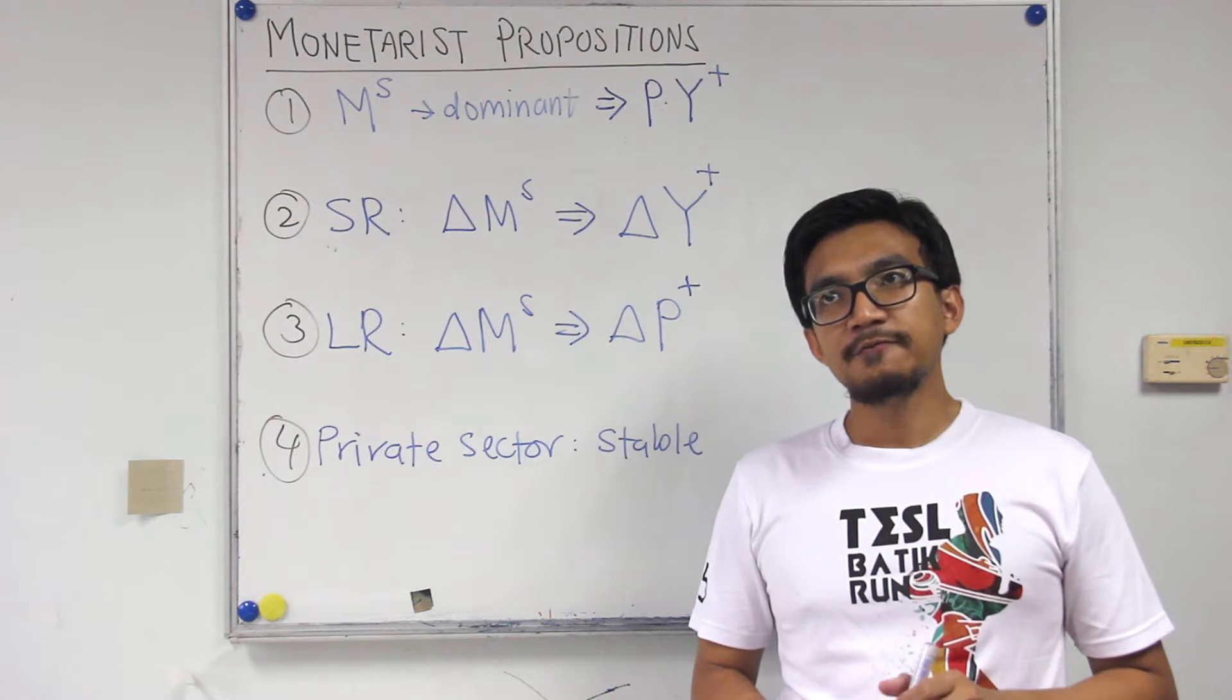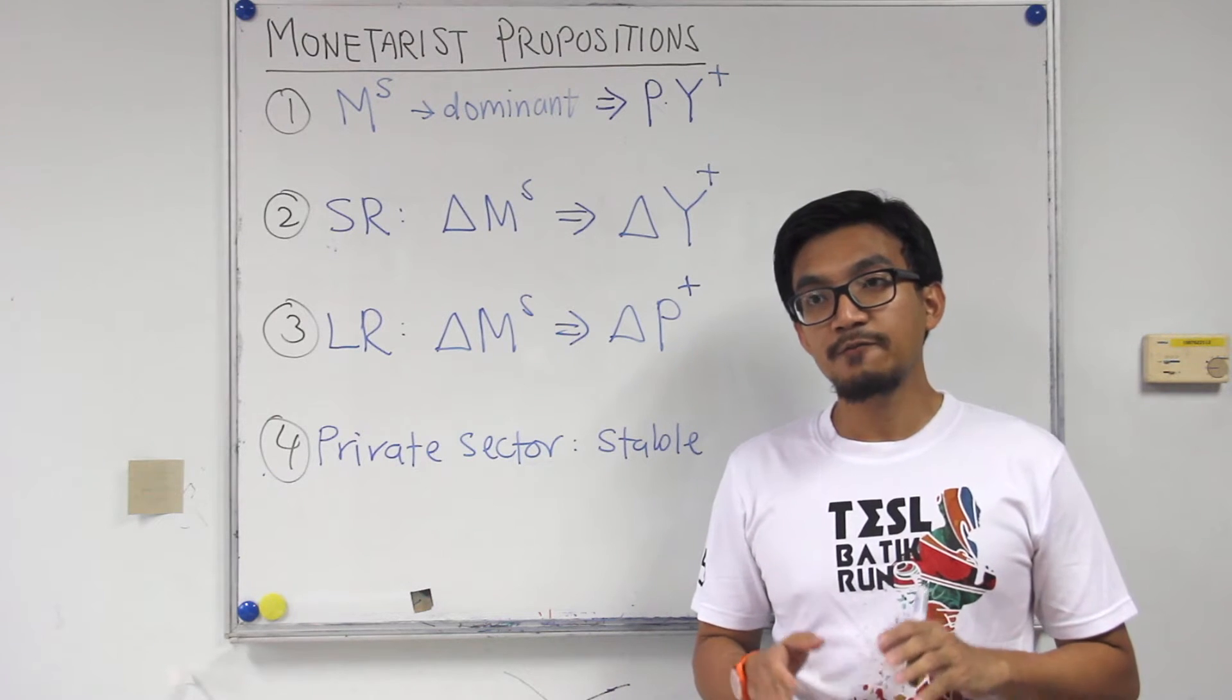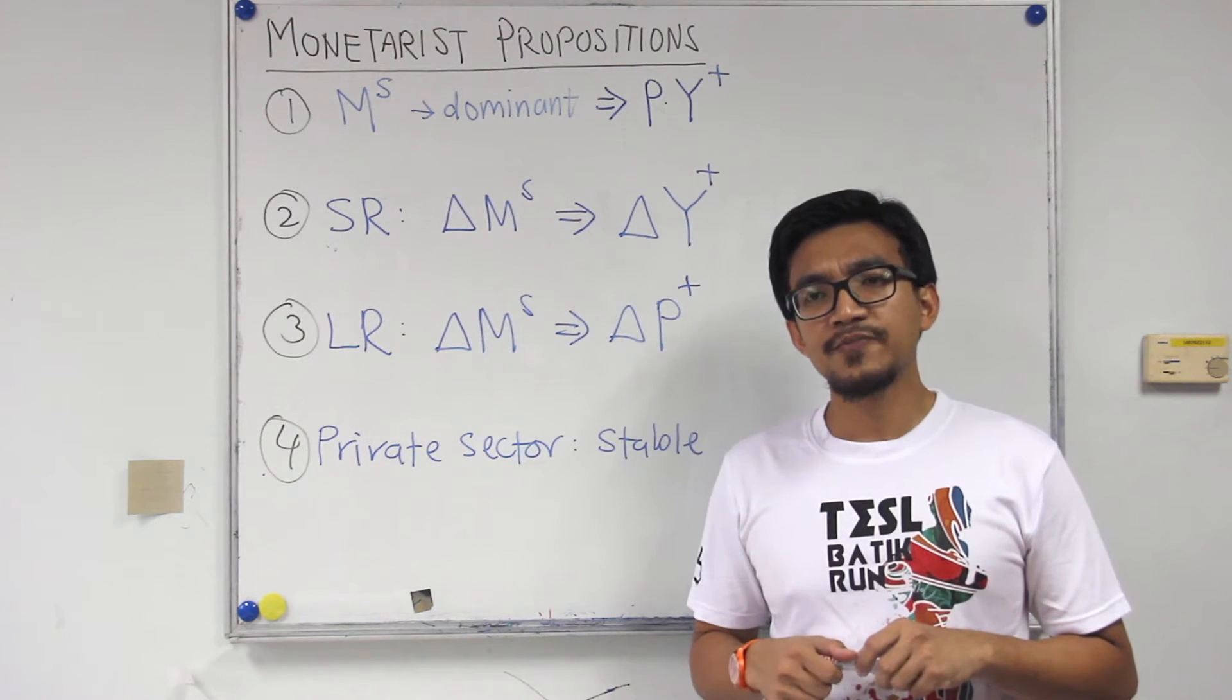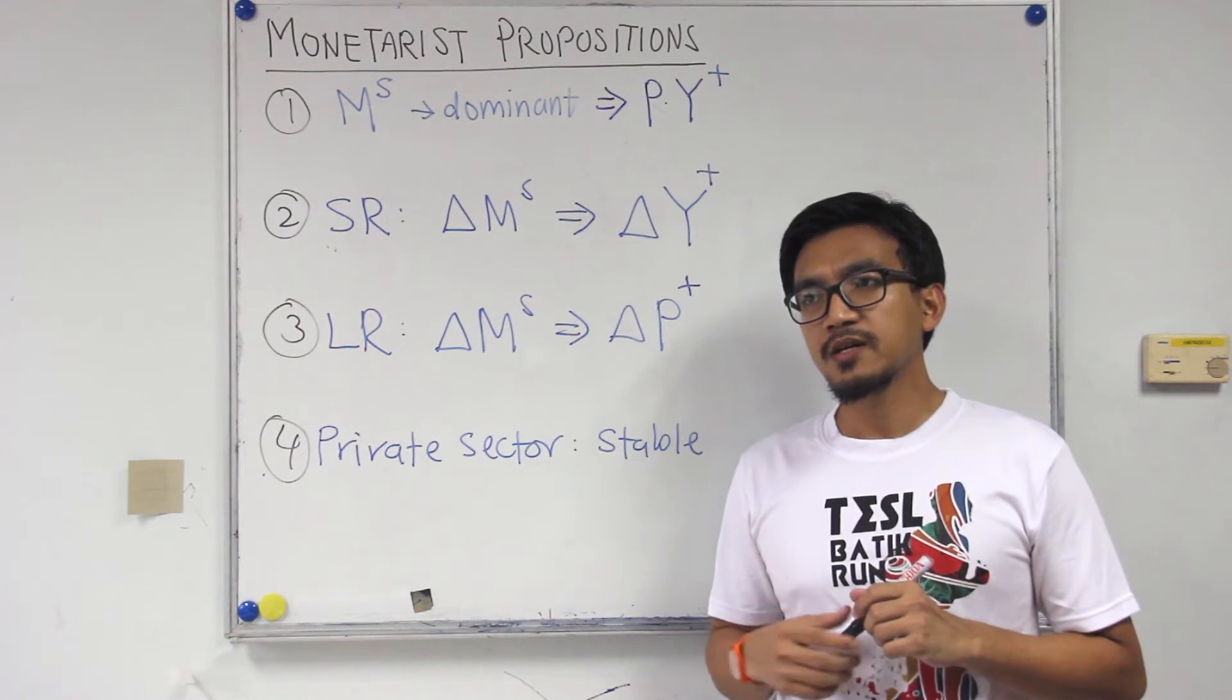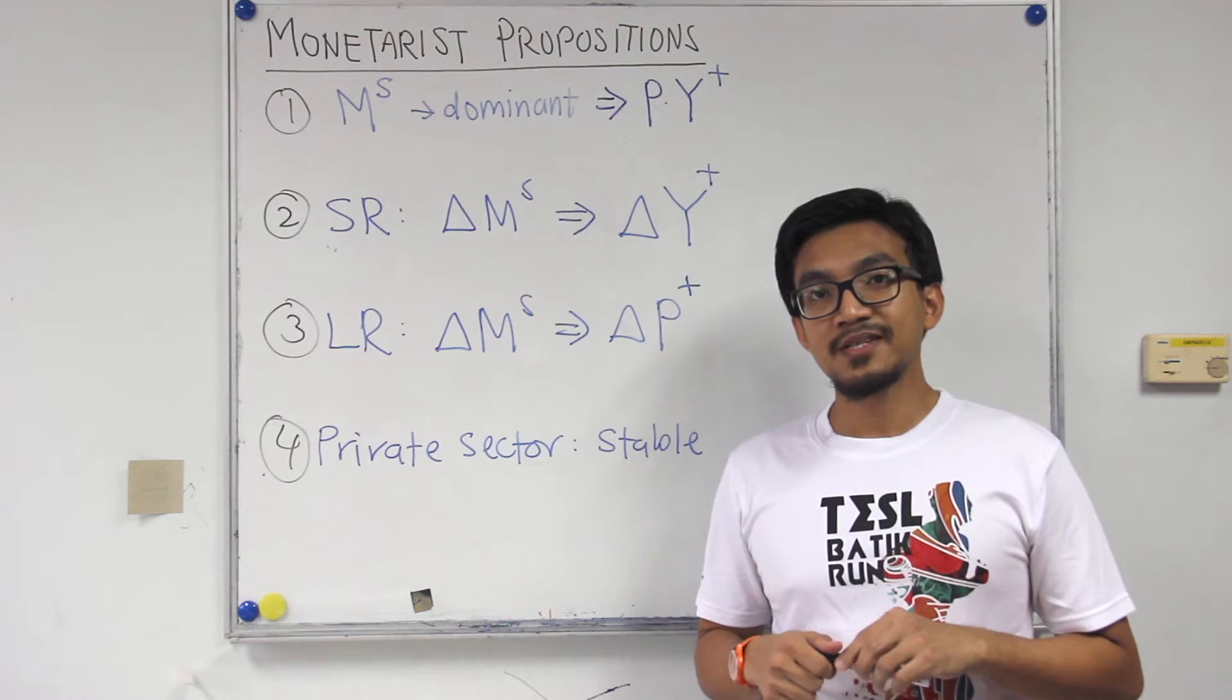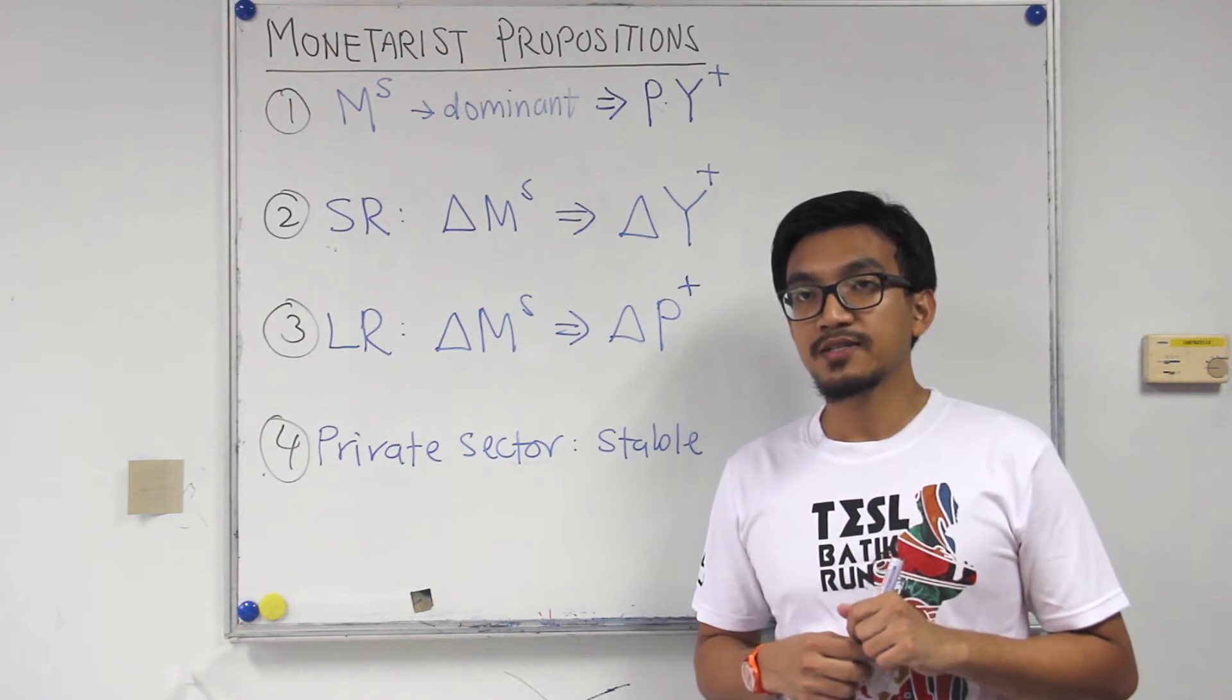Alhamdulillah. Equilibrium from the Keynesian point of view. So today we're going to look into another school in macroeconomics which is the monetarist. Last week we already started our discussion on the monetarist but let's just do a few revisions before we move on to the next topic.